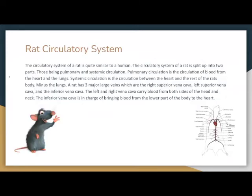The circulatory system of a rat is quite similar to a human's. It is split into two parts: pulmonary and systemic circulation. Pulmonary circulation is the circulation of blood from the heart to the lungs. Systemic circulation is the circulation between the heart and the rest of the rat's body, minus the lungs. A rat has three major large veins: the right superior vena cava, left superior vena cava, and the inferior vena cava. The left and right vena cava carry blood from both sides of the head and neck, while the inferior vena cava brings blood from the lower body to the heart.